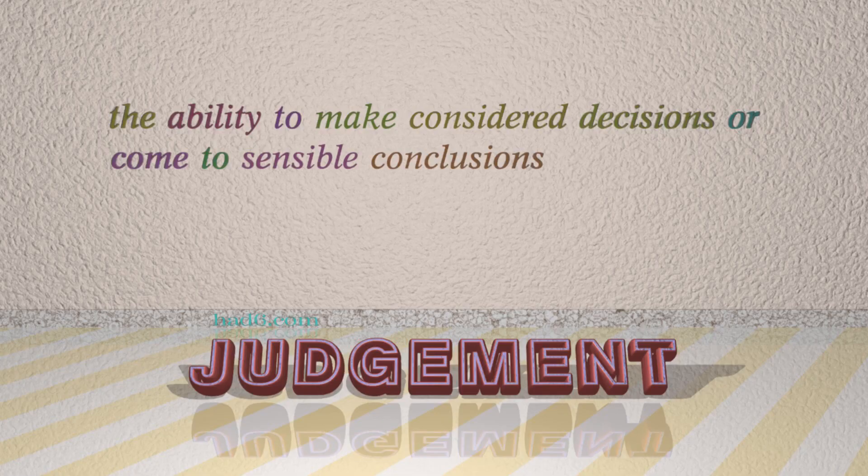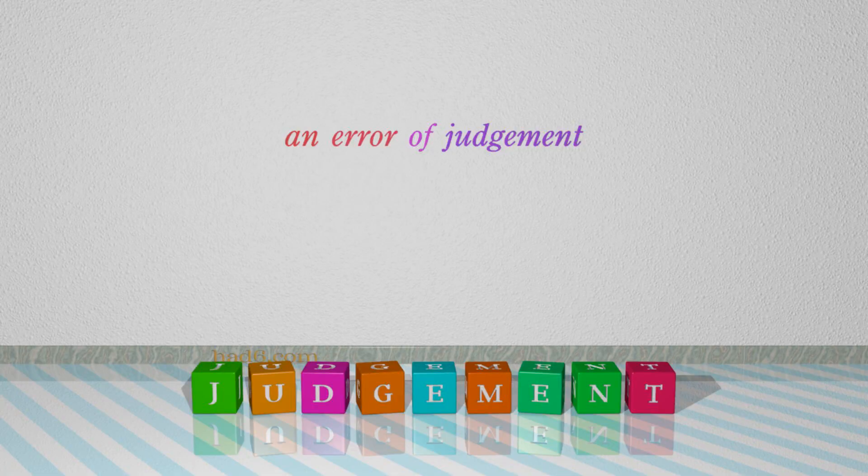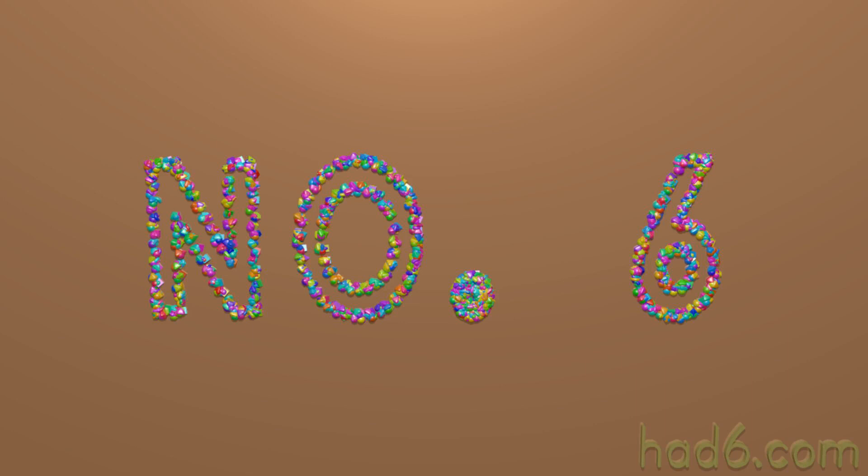Number 5: Judgment, which means the ability to make considered decisions or come to sensible conclusions. For example: An error of judgment.